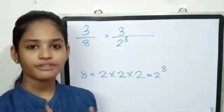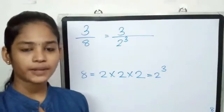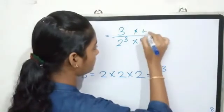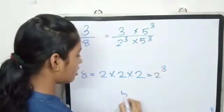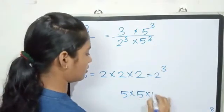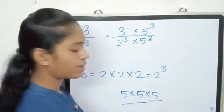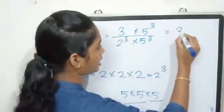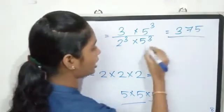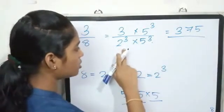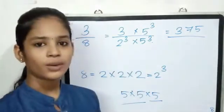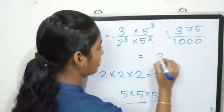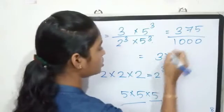Now we get 2 cubed. 3 by 8 is 2 cubed. Now we get 3 cubed. Now we get 5 squared — in the numerator and denominator, we get 5 cubed. How many times? 5 divided is 25 into 5, which is 125 times. 125 and 5 is 125. Now we get 3 divided into 8.